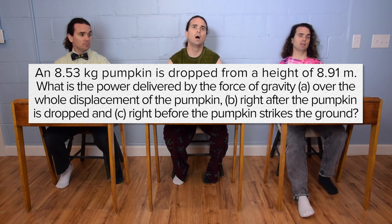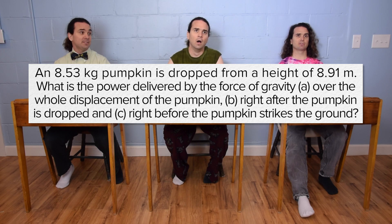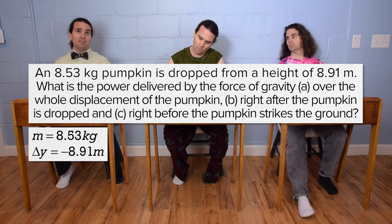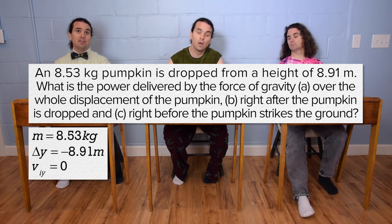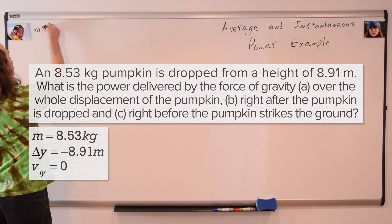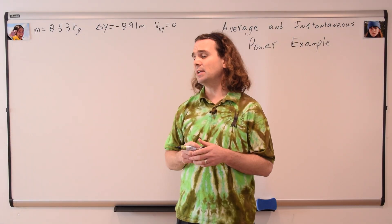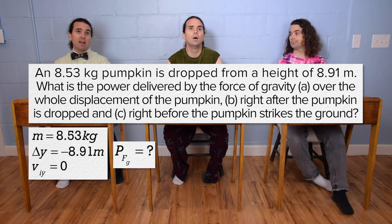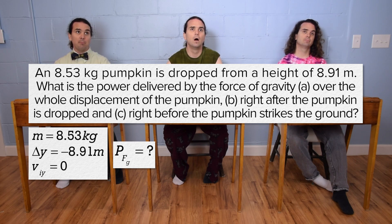An 8.53 kilogram pumpkin is dropped from a height of 8.91 meters. Mass equals 8.53 kilograms, displacement in the y direction is negative 8.91 meters, and the initial velocity in the y direction is zero. What is the power delivered by the force of gravity? Power delivered by the force of gravity equals question mark, and let's write out the equations for power.